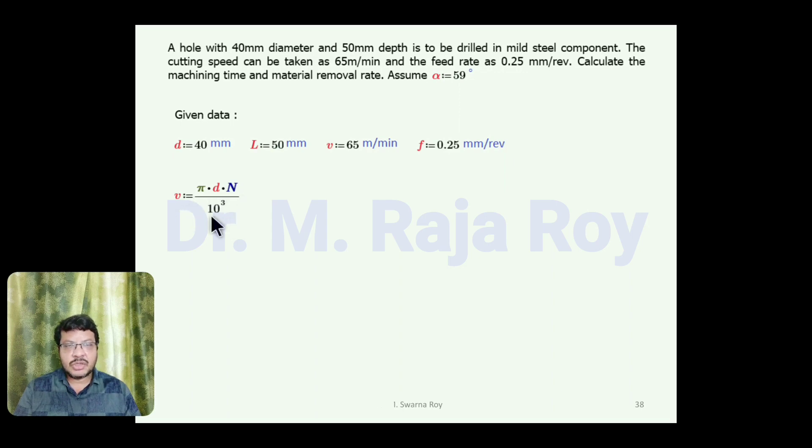V equals π D N divided by 1000. Why 1000? D value is in mm and V value is given in meters per minute. If V is given in meters per second, in the denominator you will get 60 times 10³. Here it's given in minutes, so 60 is not required. From this you can get N value by rearranging: N equals V times 1000 divided by π times D. From this you get N in revolutions per minute.